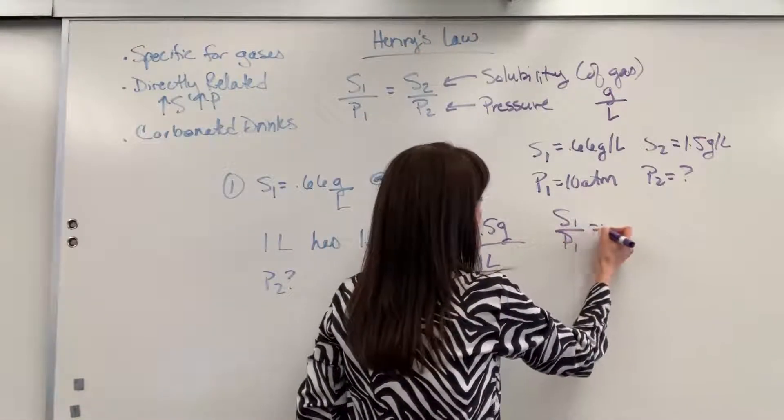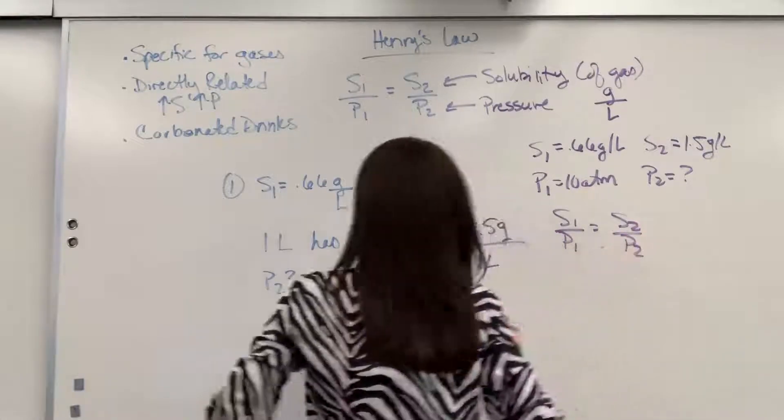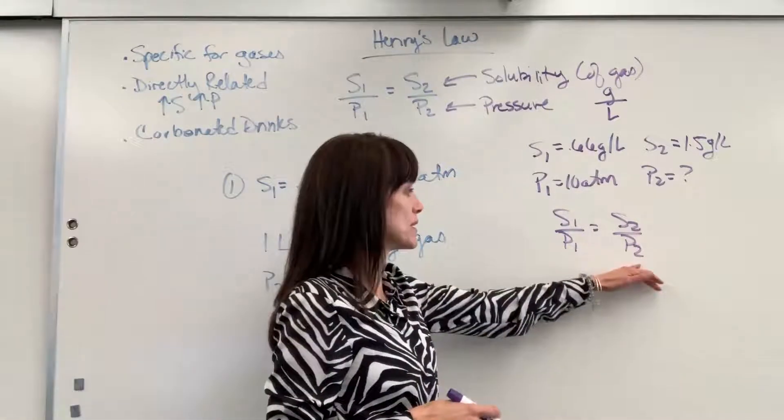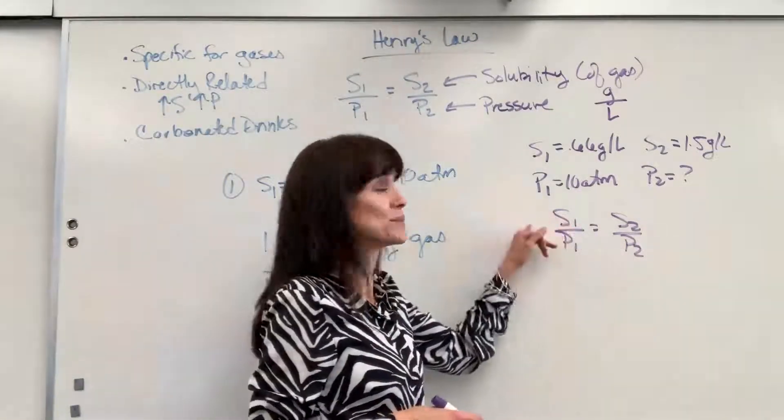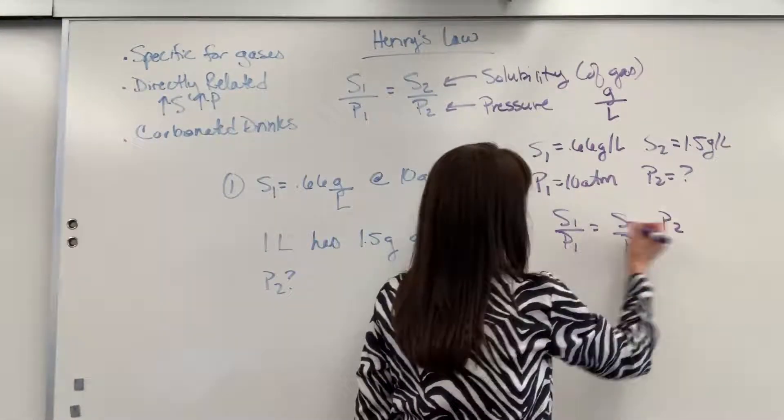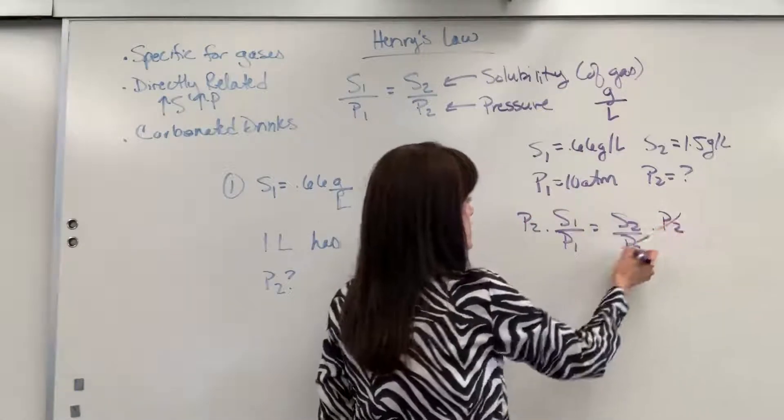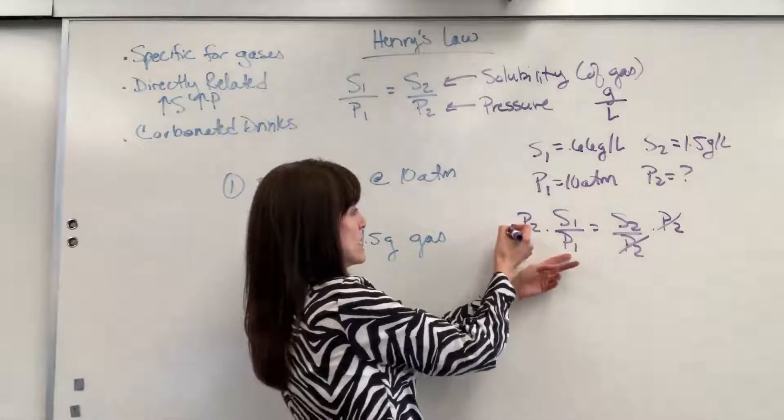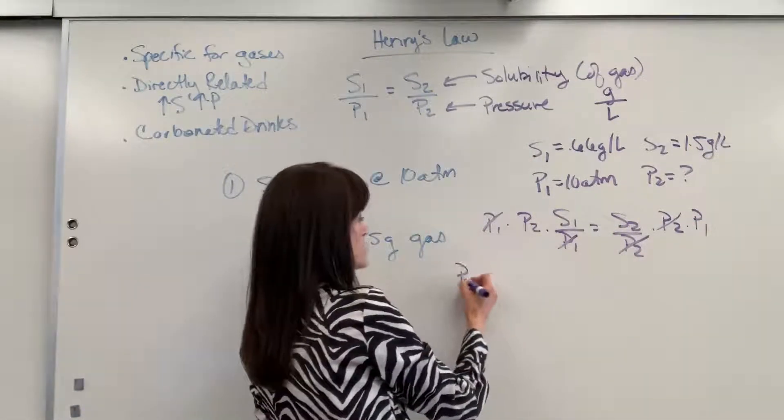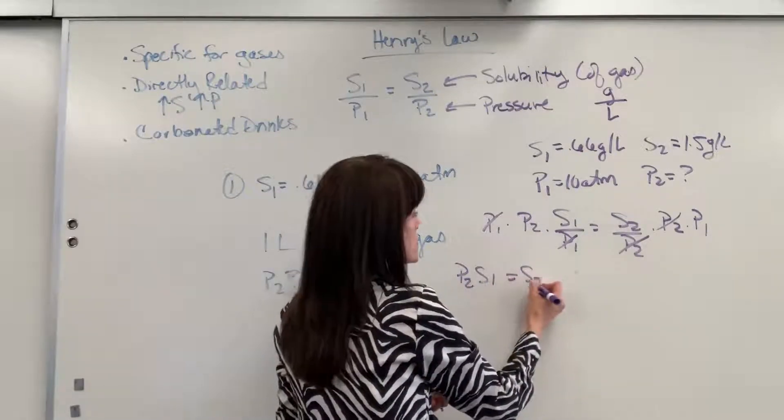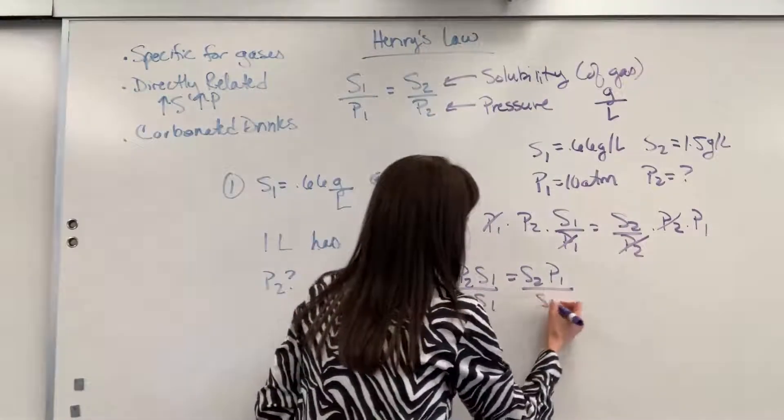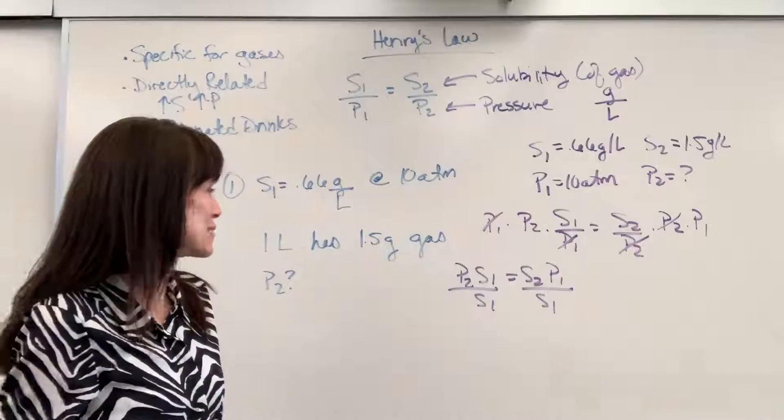S1 over P1 equals S2 over P2. And we're going to solve for P2. Now be careful. This is in the denominator. In order to solve for it, it's got to be in the numerator. So I'm going to go ahead and cross multiply. I'm going to do the P2 on both sides. So P2 cancels. And let's also multiply the P1. So P1 cancels here. And we're going to end up with P2S1 equals S2P1. I want to get the P2 by itself. We'll divide both sides by S1. And now the fun and easy part is the plug and chug.